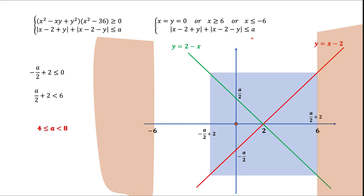When A goes negative, we can quickly see there are no solutions, because we would need something non-negative on the left-hand side to be less than or equal to a negative number — that never happens. So considering all possible cases of A, the system of inequalities has exactly one solution for A in the interval from 4 (inclusive) to 8 (exclusive).